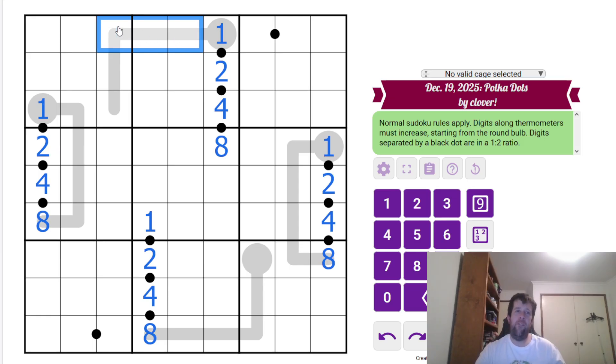When you're pencil marking a thermometer, we're going to ignore conflict checker for a second. If you're trying to figure out degrees of freedom, what you should do is write what's the lowest possible digit that can go on any of these. So, 2, 3, 4, 5, 6 is the lowest thing this could be. Now, the highest possible thing this could be is 9, 8, 7, 6, 5. And then what you want to do is you want to fill in all the blanks. So, that's 4, 5, 5, 6, 6, 7, 7, 8.